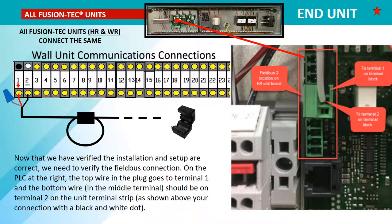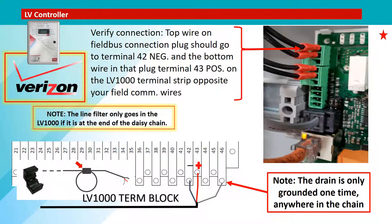Now that we've verified the installation and setup are correct, we need to verify the field bus connection. Make sure it lines up with your field connections on terminals 1 and 2 on the PLC. The top wire in the plug goes to terminal 1 — we've put a black dot on terminal 1 where this wire connects. The bottom wire should be on terminal 2 where the white dot is. For Verizon, if you're working with an LV controller, we need to verify the connection on the field bus as well. The top wire on the field bus connection plug should go to terminal 42, which is marked negative.